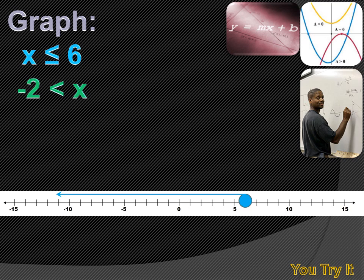How about minus 2 is less than X? You may want to remember that you can turn that expression around and write it as X is greater than minus 2, because in both cases the bigger number is towards the open end of the inequality symbol. So X is greater than minus 2 is exactly equivalent to minus 2 is less than X.